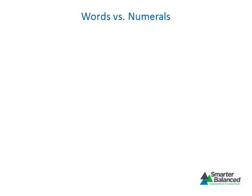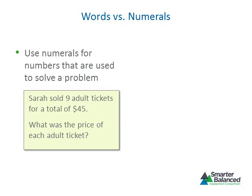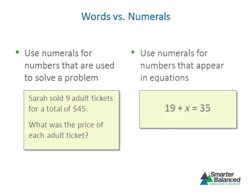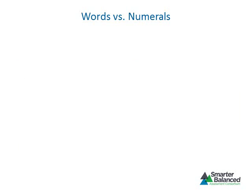Now let's look at the treatment of numbers. Always use numerals for numbers that are used to solve a problem. For example, numerals should be used for 9 and for 45 because they must be used to solve the problem. Use numerals for numbers that appear in equations, such as 19 and 35 in an equation example.